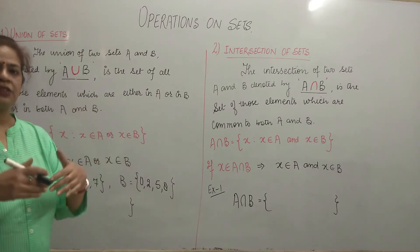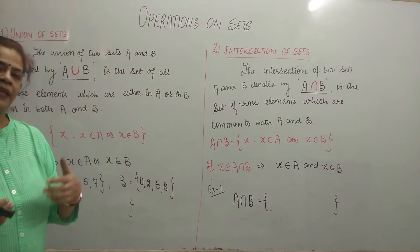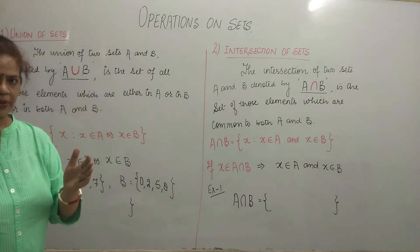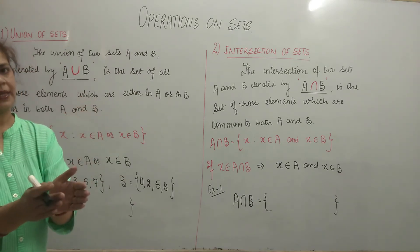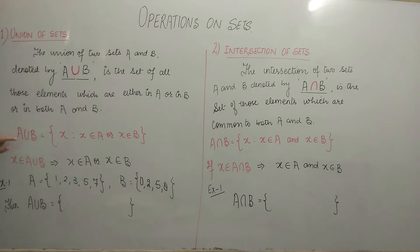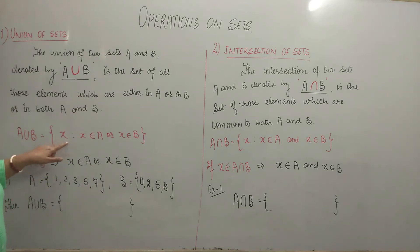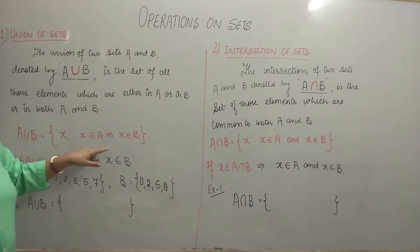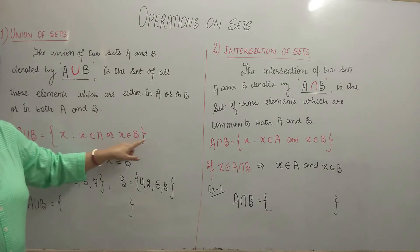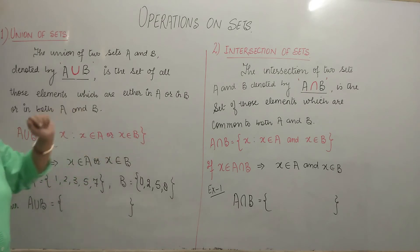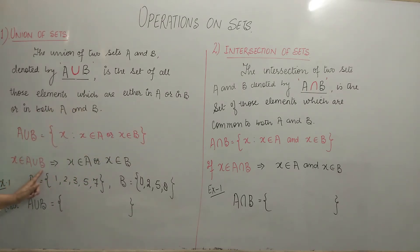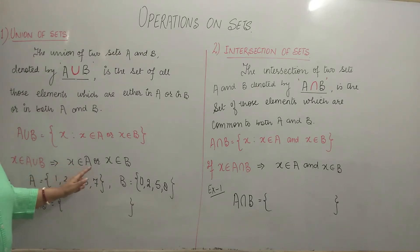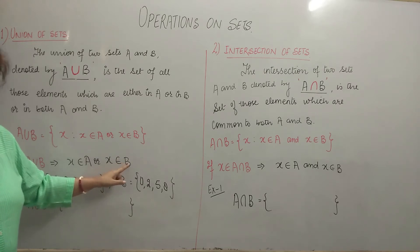You are combining two sets, so you are taking elements of A and elements of B together. So A union B is the set of those elements X such that X belongs to A or X belongs to B. If any element X belongs to A union B, it means that either X belongs to A or X belongs to B.